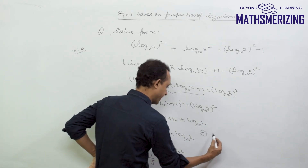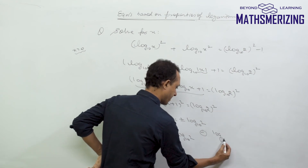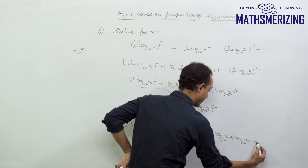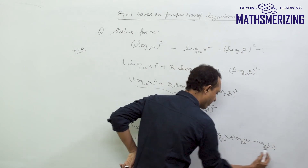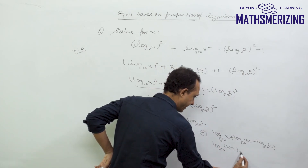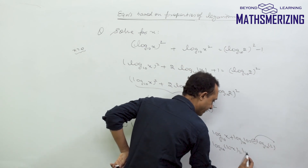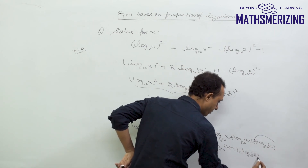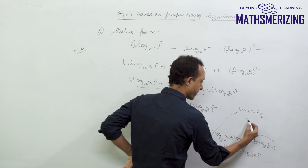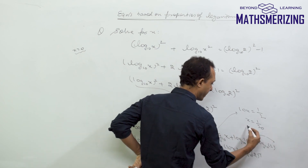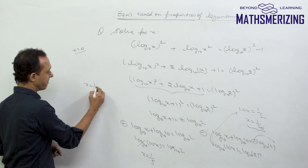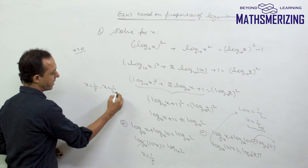Taking the minus sign, log x (base 10) plus log 10 (base 10) equals minus log 2 (base 10), so log(10x) equals log 2 to the power minus 1, giving 10x equals 1 by 2, so x equals 1 by 20. Therefore, the number of solutions to this equation is 2: x equals 1 by 5 or x equals 1 by 20.